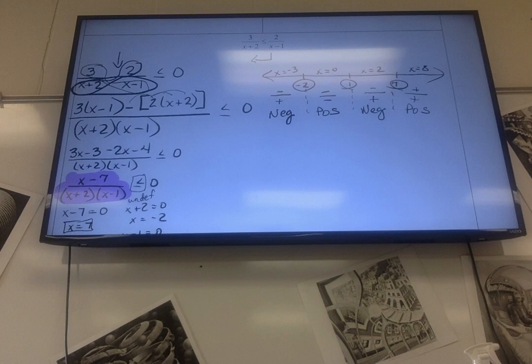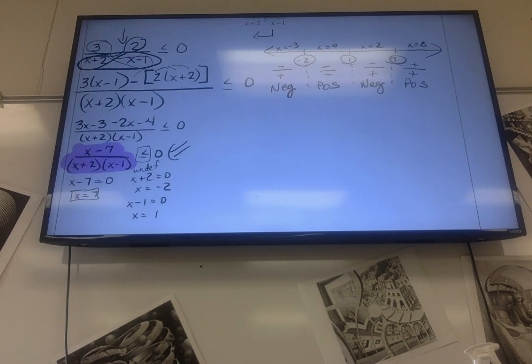And we look back here again, we want to know where that's less than or equal to zero. Well, the only place it's equal to zero is at 7. Everything else it's not. So it's where it's negative and where it's 7. So it's negative from negative infinity to negative 2, and from 1 to 7. And I'm going to include 7 because 7 was the only spot that it actually equaled zero.